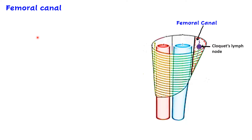Now let us look at the femoral canal in detail, because it is very important clinically and surgically. It is a potential gap that may allow the occurrence of hernia — structures from the abdomen, like intestine, may pass through this weak point in the femoral sheath, giving it great clinical significance.